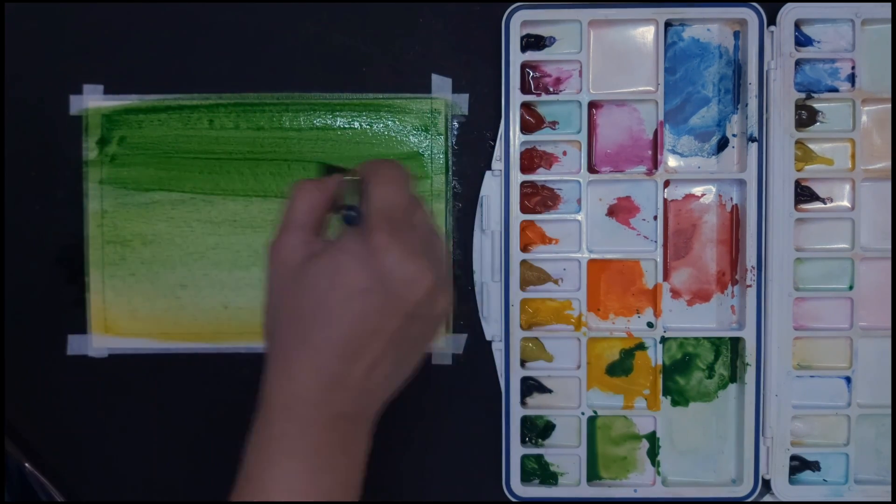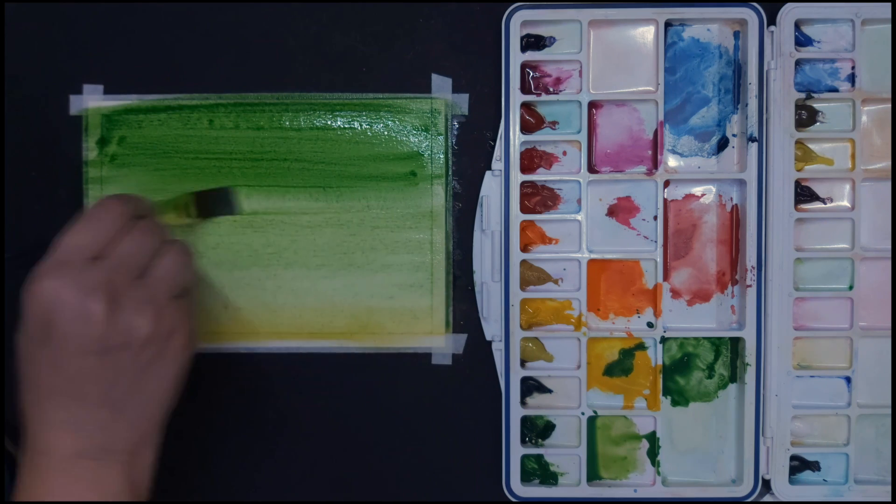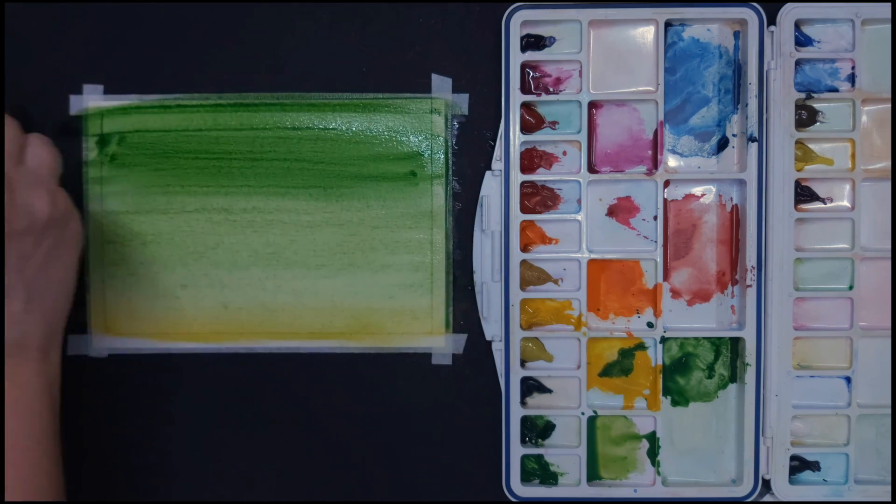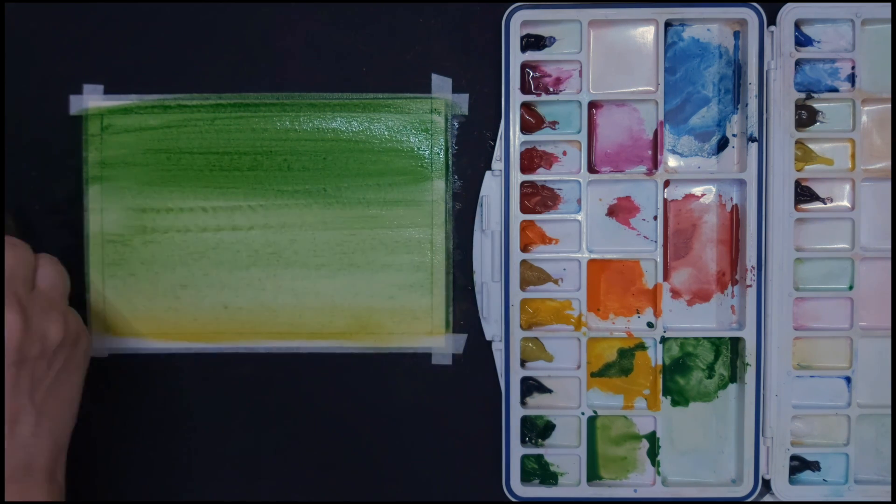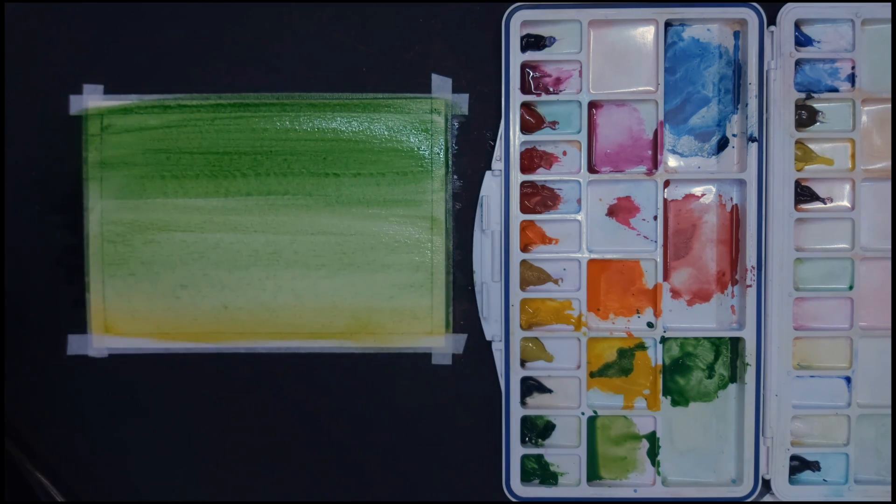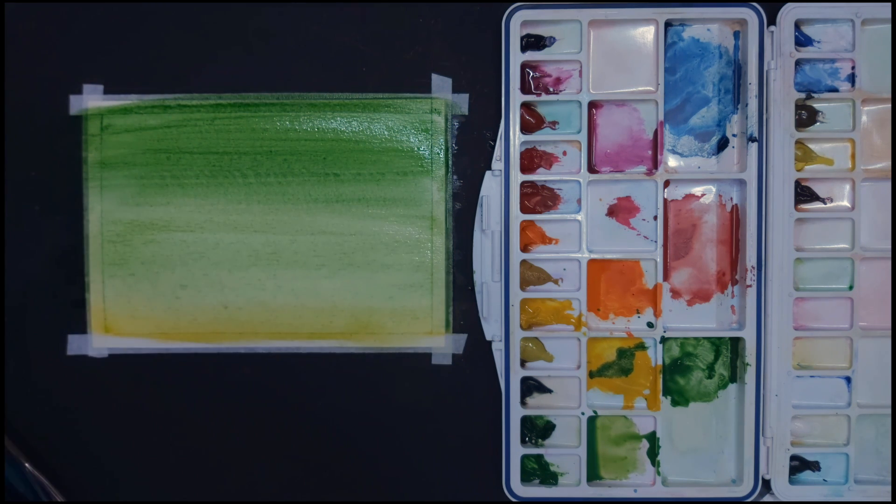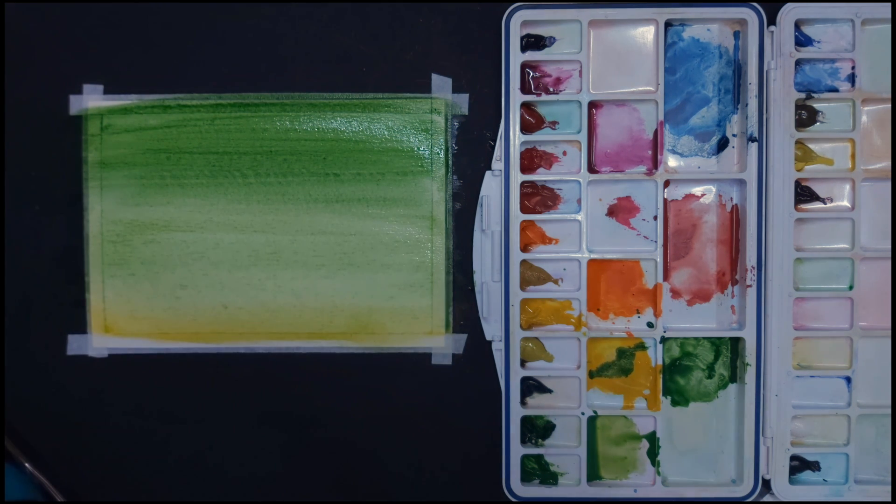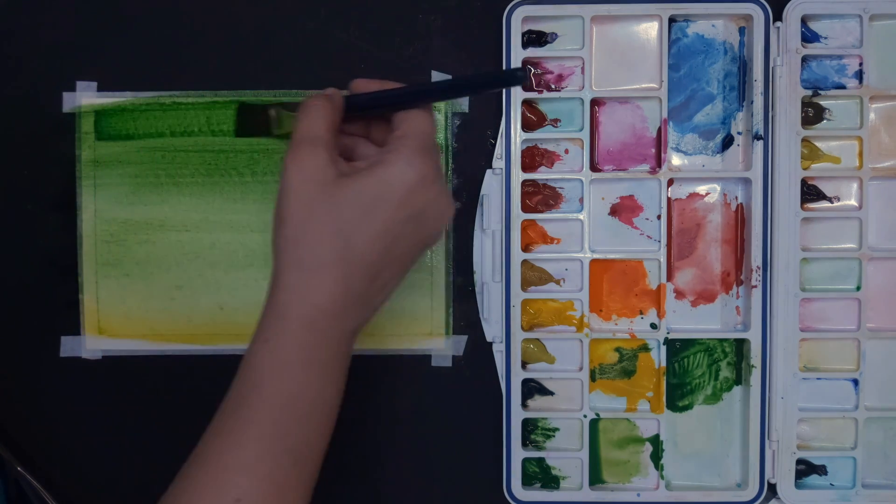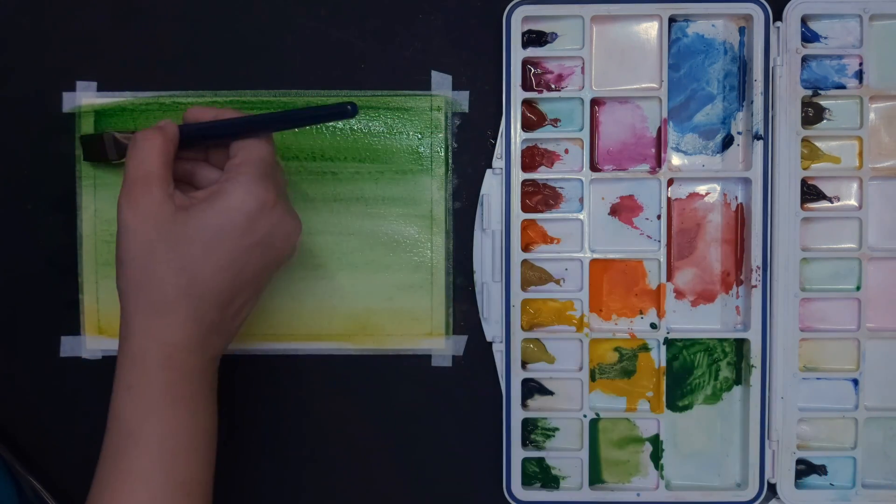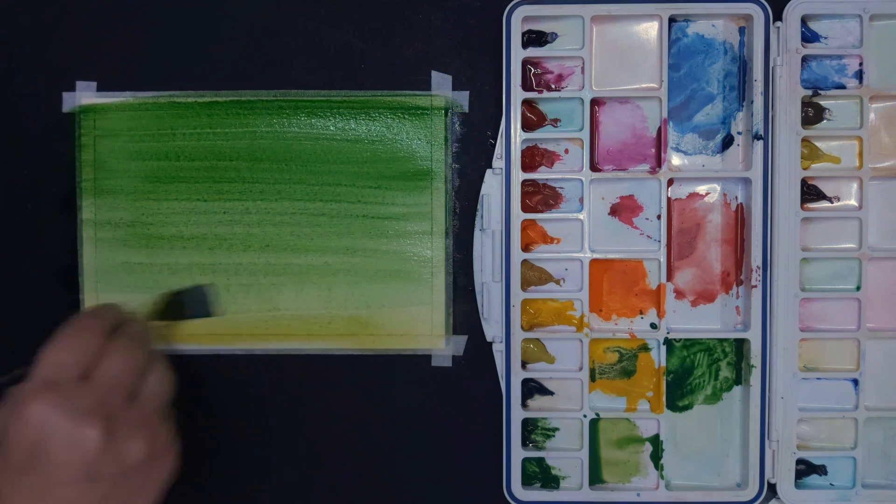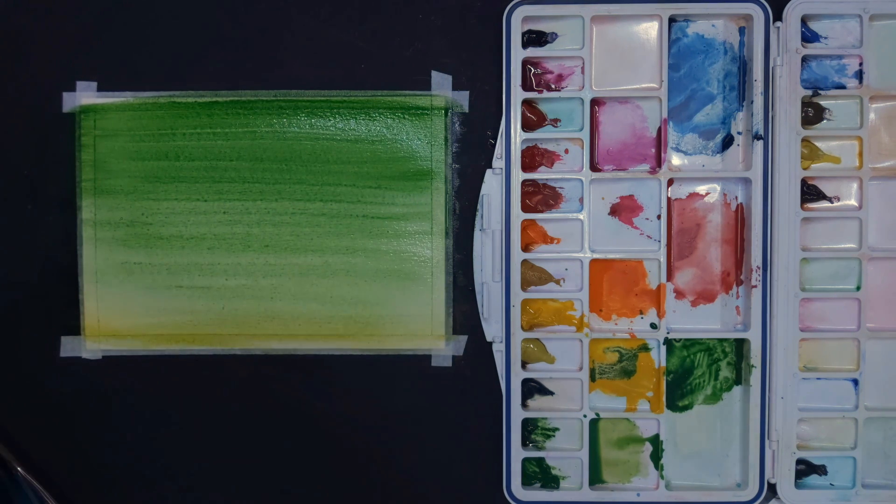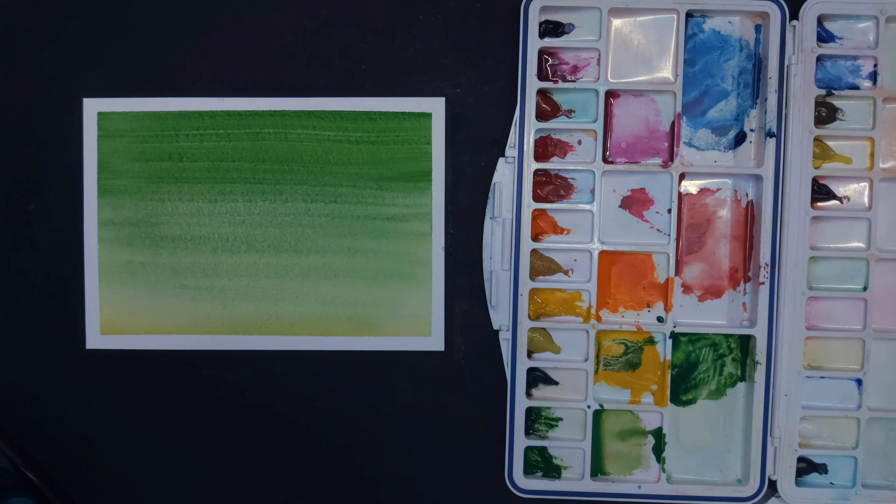For smooth merging, just take water and spread it evenly with the brush all over. Here we have our gradient base ready using the wet on wet vertical technique.